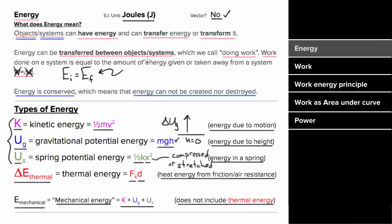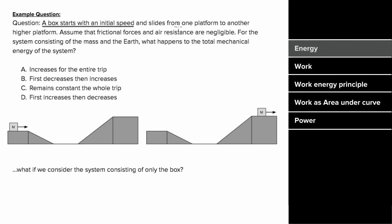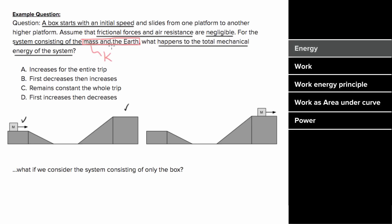Let's say a box started with an initial speed and slides from one platform up to another platform. We'll assume that frictional forces and air resistance are negligible. For the system consisting of the mass and the earth, what's happening to the total mechanical energy? You have to pay special attention to what is in your system. Since my system includes the mass, which is going to be moving, my system is going to have kinetic energy. And since my system has two objects interacting gravitationally — the mass and the earth — my system is also going to have gravitational potential energy. So the total mechanical energy is really just code for the total kinetic and potential energy of the system.